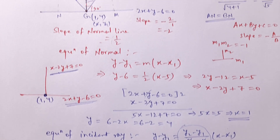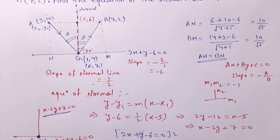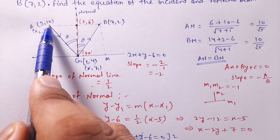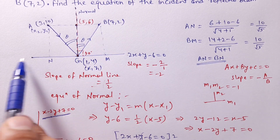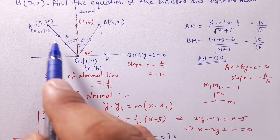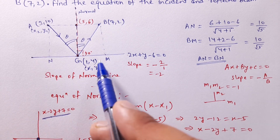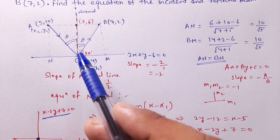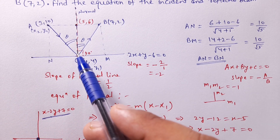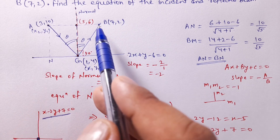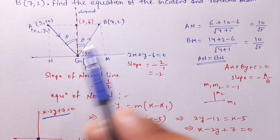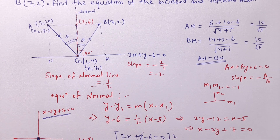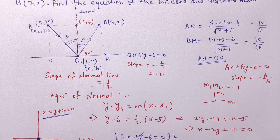So this is how we find the incident and reflected ray equations. The key insight is that point A and point B are equidistant from the line mirror — both have the same perpendicular distance. Without noticing this clue, this problem cannot be solved. Always check what trick is hidden in such problems.